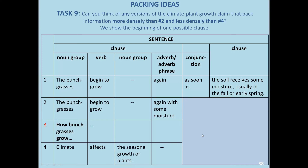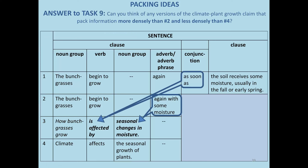You might want to pause the video here. One possible way of completing this is: 'How bunch grasses grow is affected by seasonal changes in moisture.' In this case, the logical relationship is packed into the verb, and the rest of the meanings are packed into another noun group: 'seasonal changes in moisture.'